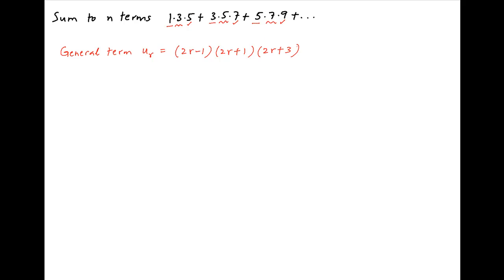Therefore U_R is equal to (4R² − 1)(2R + 3), which is further equal to 8R³ + 12R² − 2R − 3.